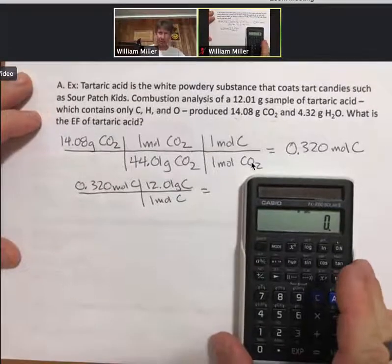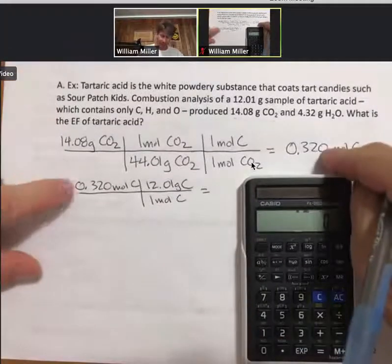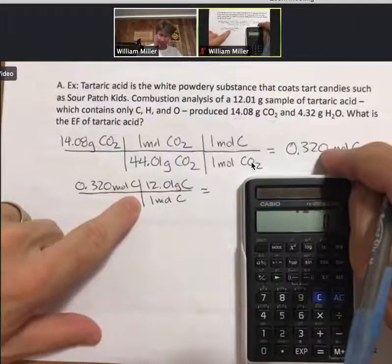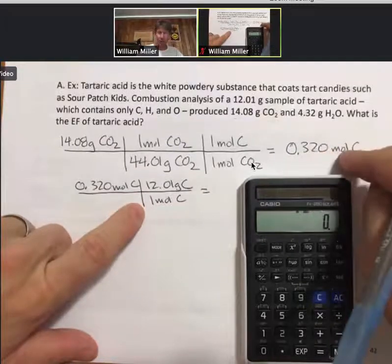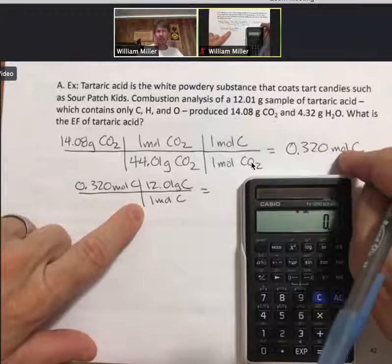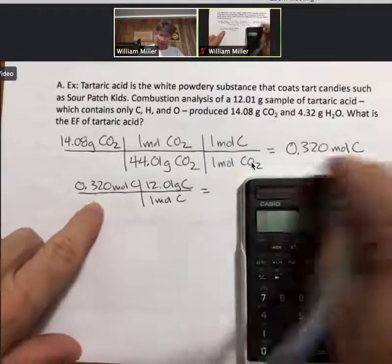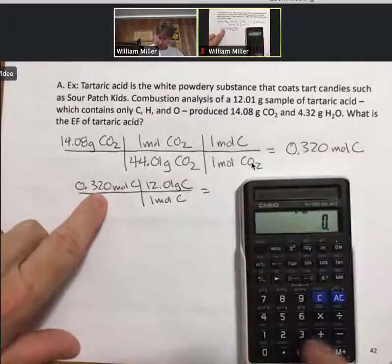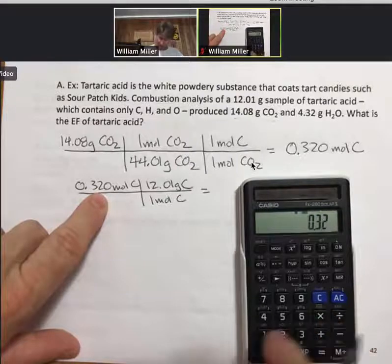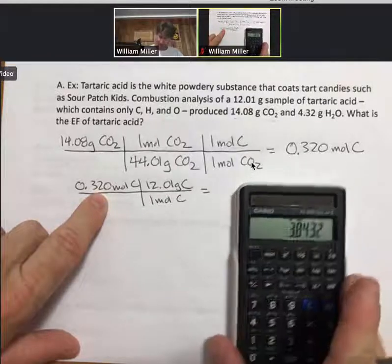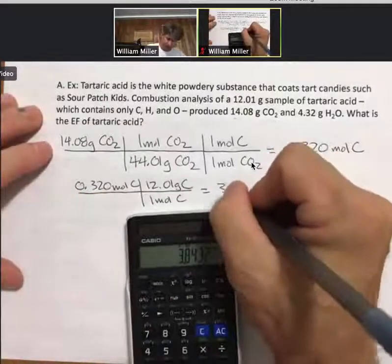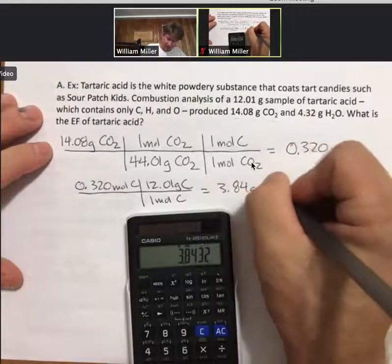And whenever I do calculations, whatever I write down is what I actually calculate. You should feel free to carry more digits for your intermediate steps during calculations. But I will always do exactly what I write here, so 0.32 times 12.01, 3.84 grams of carbon.